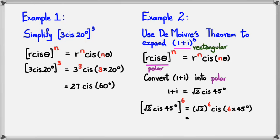Simplifying: √2 to the power of 6 gives us 8, and 6 times 45 gives us 270°. So we get 8 cis 270°. You can leave the answer in polar form, but if they ask for rectangular form, converting 8 cis 270° gives simply −8i. And that's the two ideas in terms of using De Moivre's Theorem to expand complex numbers. That's about it for this session — thank you for watching.